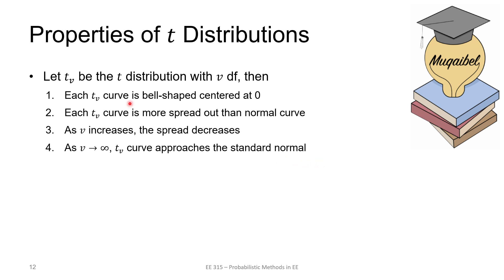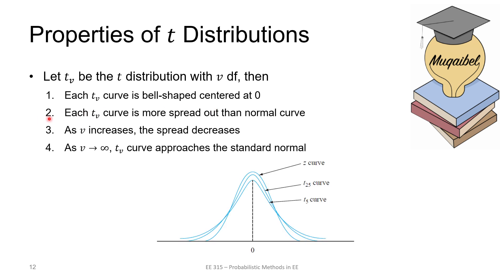Properties of the t-distribution: let t_v be the t-distribution with v degrees of freedom. Each t_v curve is bell-shaped and centered at zero, but more spread out than the normal curve. As v increases, the spread decreases. As v approaches infinity, the curve approaches the standard normal distribution — so the t-distribution is a family of curves that includes the normal distribution as a limiting case.